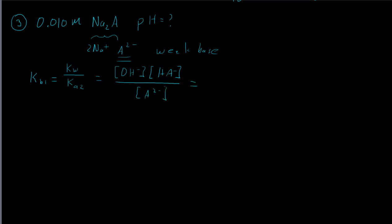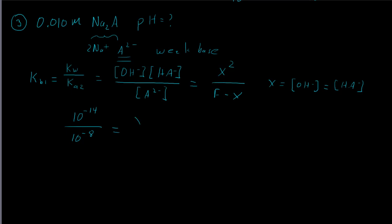Using the RICE table we find KB1 equals x squared over (F minus x), where x equals the hydroxide concentration and also the HA- concentration. Kw is 10⁻¹⁴ and Ka2 is 10⁻⁸, so KB1 equals 10⁻⁶. The formal concentration F is 0.01, and we set up the quadratic equation to solve for x.